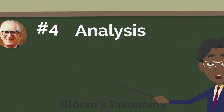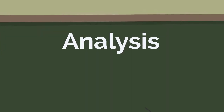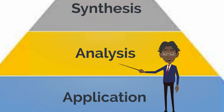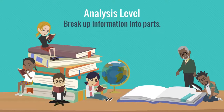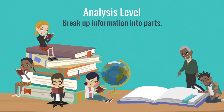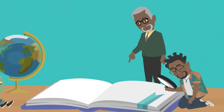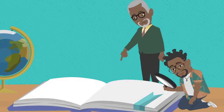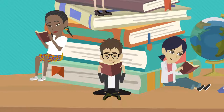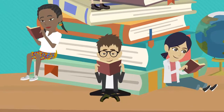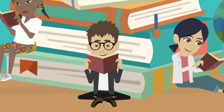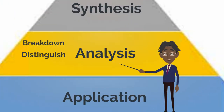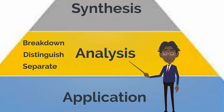Number 4: the analysis level. At this level, students should be able to break up any new information into parts to identify reason, causes, or motives. They should be able to find evidence to support a point of view. Action verbs at this level include words such as breakdown, distinguish, and separate.